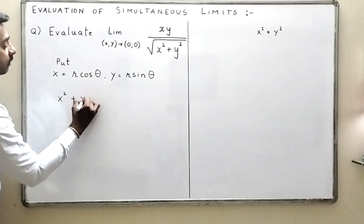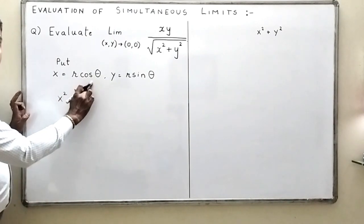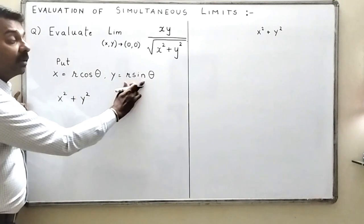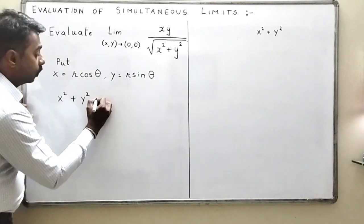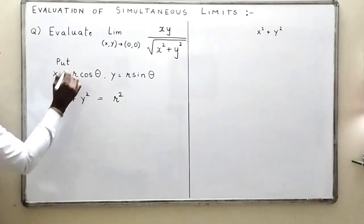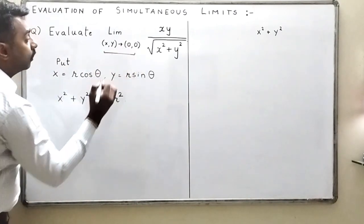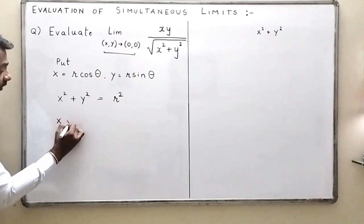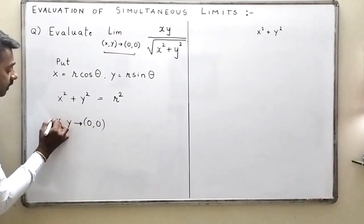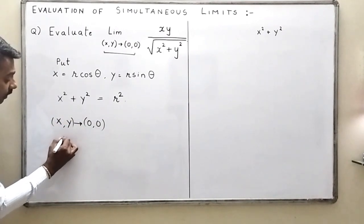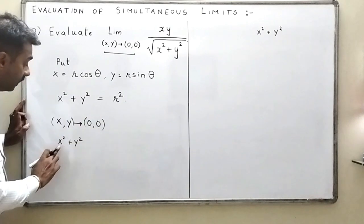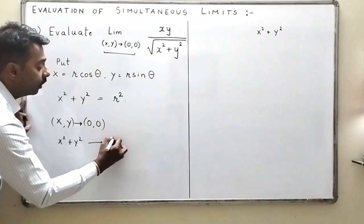Because of this substitution, x² + y² becomes r²cos²θ + r²sin²θ, and since cos²θ + sin²θ = 1, this equals just r². Now since x and y are both tending to (0,0), x² + y² will also tend to 0.